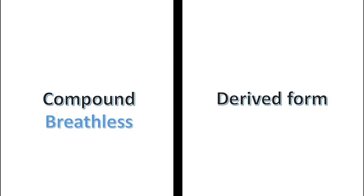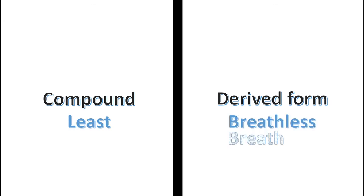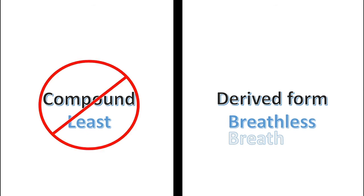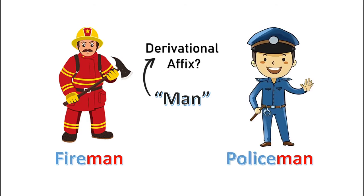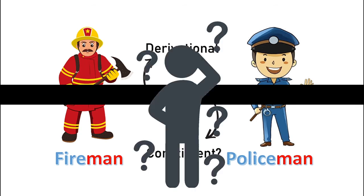How to draw the line between a compound and a derived form can also get murky. For example, you could argue that breathless is a compound formed from two stems, breath and less. Less can be a free morpheme, taking inflectional affixes like -er to create the comparative form lesser, and can also undergo suppletion to create the superlative form least. However, breathless is classed as a derived form of breath and not a compound. There is similar disagreement as to whether man, in words like fireman or policeman, is a derivational affix or a head constituent. The basic takeaway is not to worry too much — drawing thick, well-defined lines between concepts is complicated.